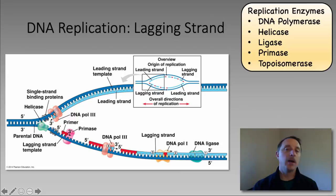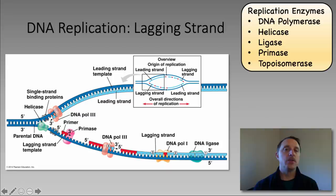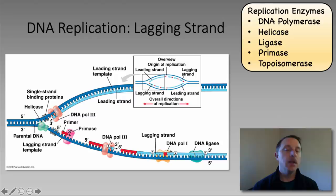Looking at the entire bubble at once, we see the leading strand being replicated all in one piece because DNA polymerase can follow helicase right along that strand and create the new DNA strand in the 5' to 3' direction. On the lagging strand, DNA polymerase has to move in the opposite direction to create the new DNA molecule in the 5' to 3' direction. Make sure you know these five enzymes involved in DNA replication and what each of them does in making our copy of all the genetic information within the cell.